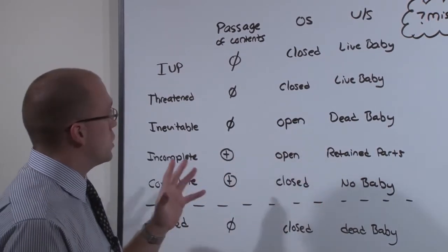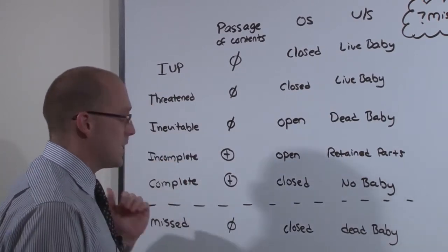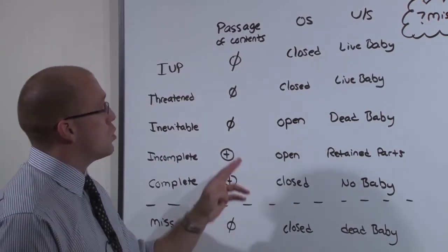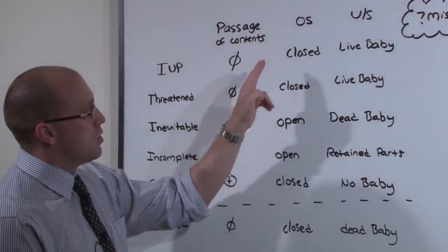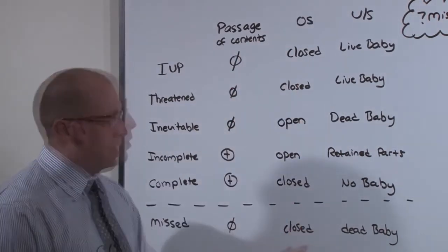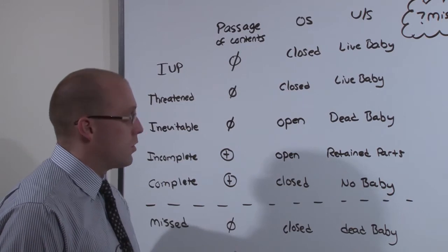So the test question is going to ask you, what type of abortion is it? And you have to make the decision based on the passage of contents, the os, and the ultrasound. That is the type of stuff for abortion you have to know.